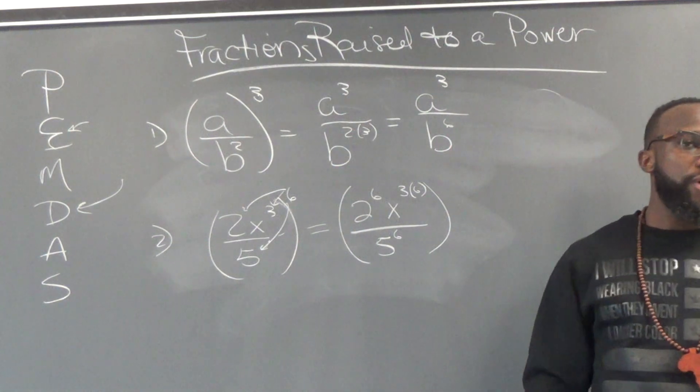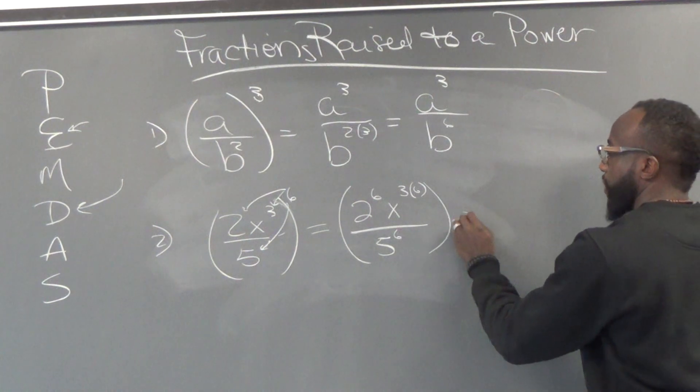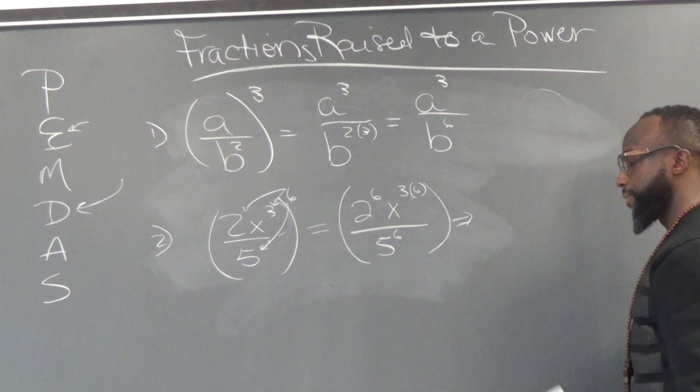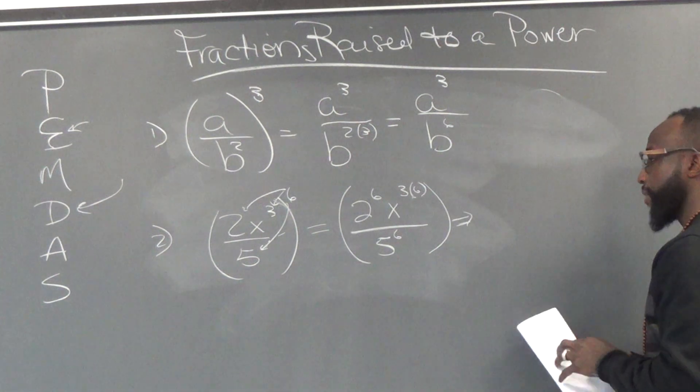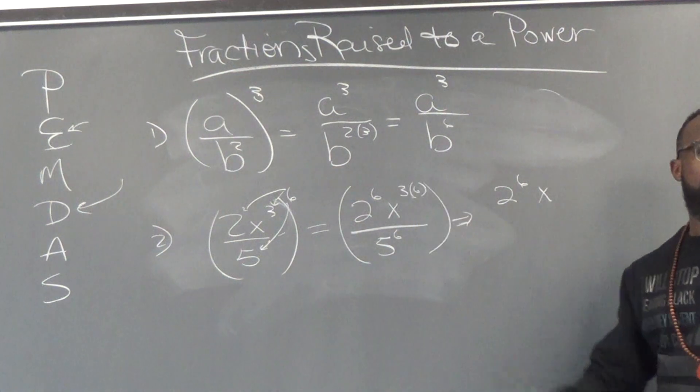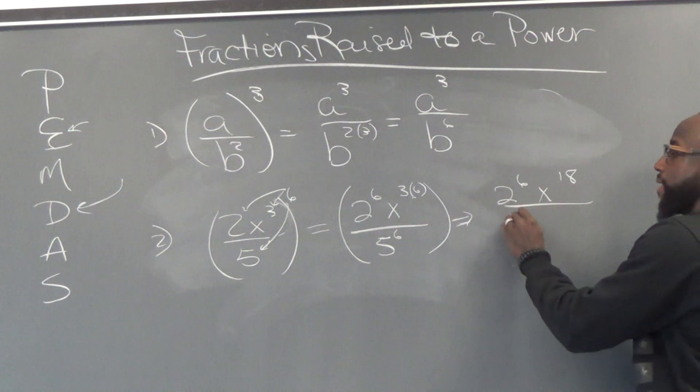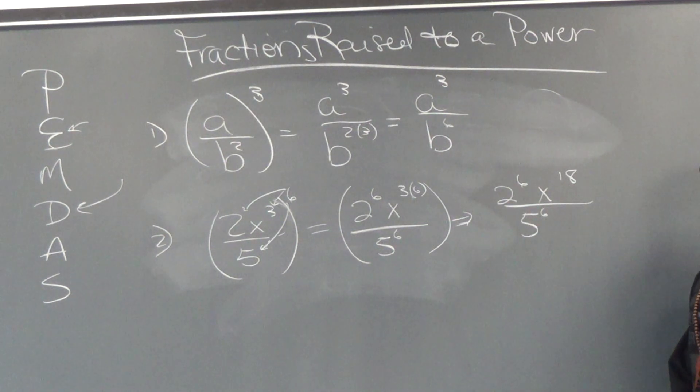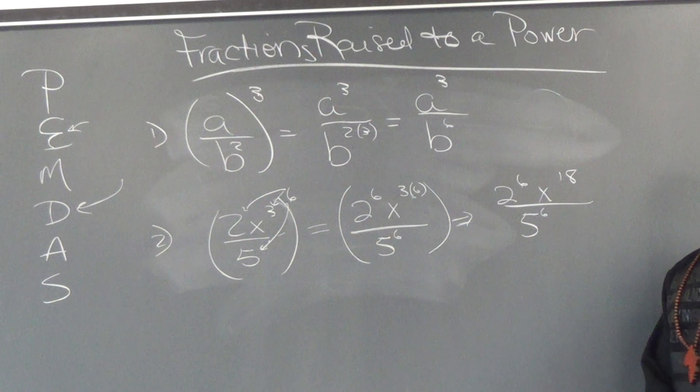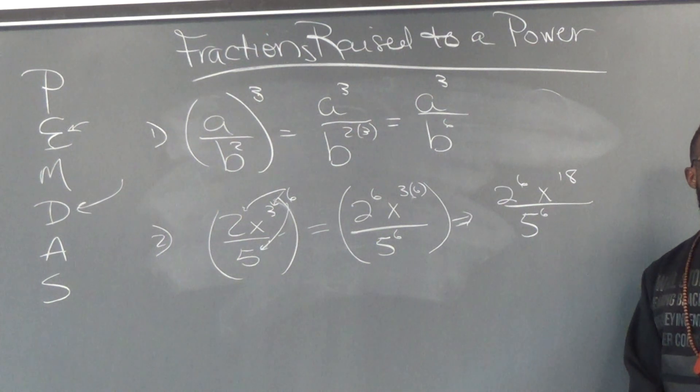2 and 5 to the sixth power is a pretty big number, so we're going to leave it as an exponent, or we're going to leave it in the exponent form. So all we're going to do is we're going to simplify this x. So we end up with 2 to the sixth power and x to the 3 times 6, which is 18. So you got 2 to the sixth power times x to the 18th power over 5 to the sixth power.